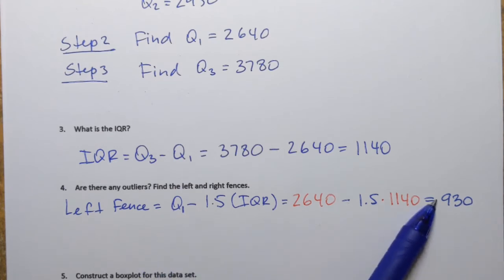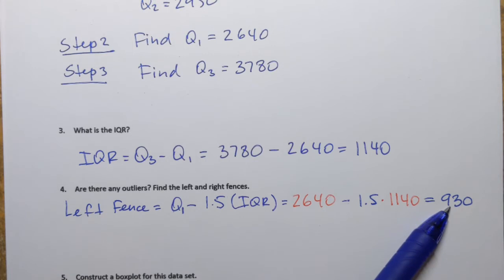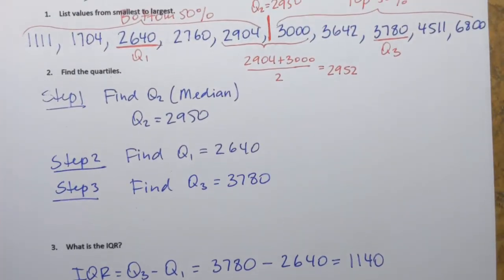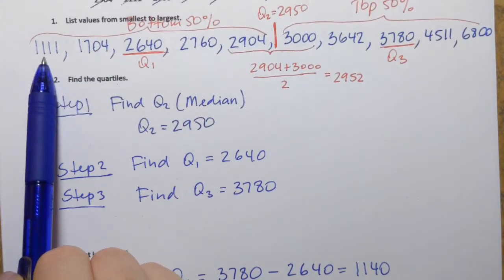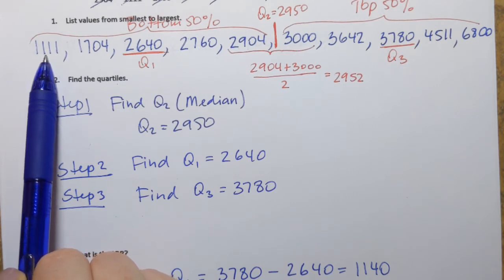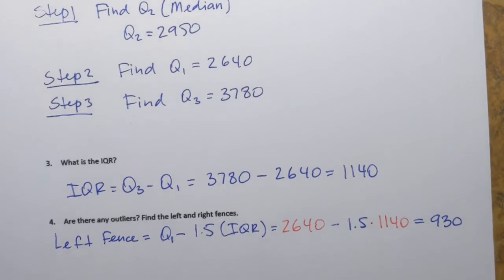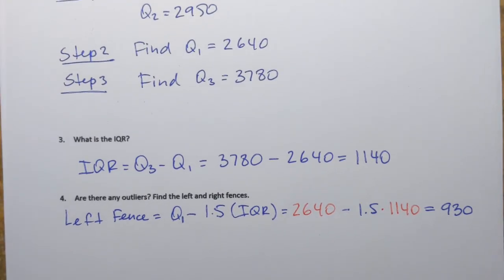So what does that mean? It means that this is like this special value that allows me to identify outliers. And since it's the left fence, I'm going to ask myself, do I have any values in my data set that are below 930 or less than 930? Let's check. Well, no, the smallest value I have is 1,111. So I don't have anything below 930. So that means that I will not have any outliers on the left.